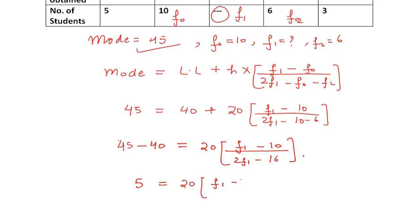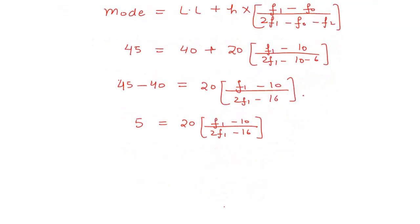F1 minus 10 divided by 2F1 minus 16. Now you can criss-cross, and your value will come. So yes, taking this to this side, left side it will be in multiplication. 5 times 2F1 minus 16 is equal to 20F1 minus 200.